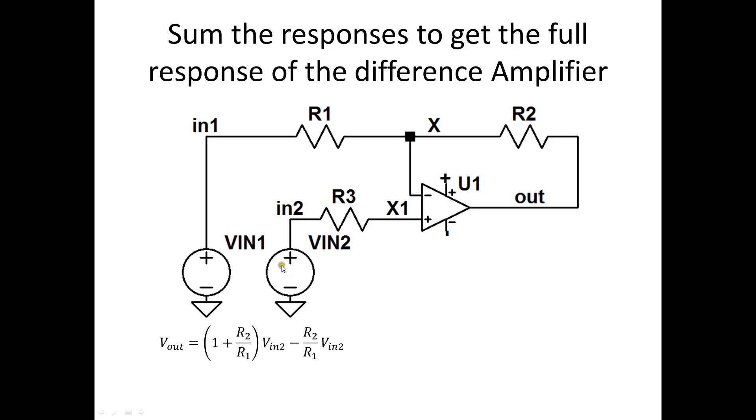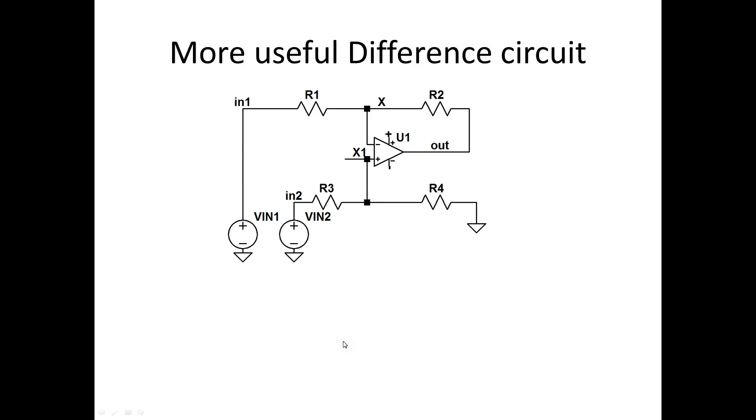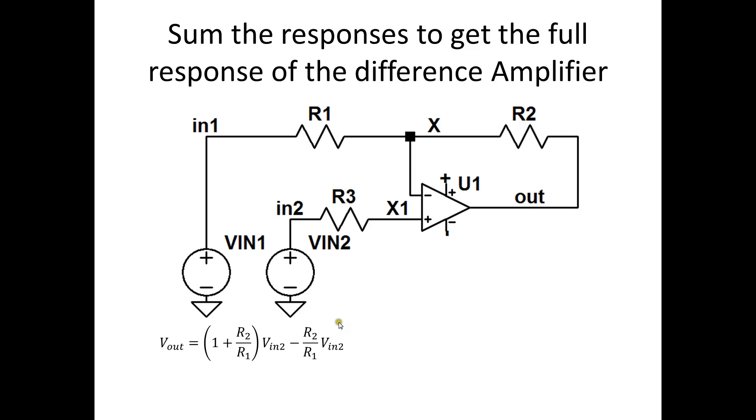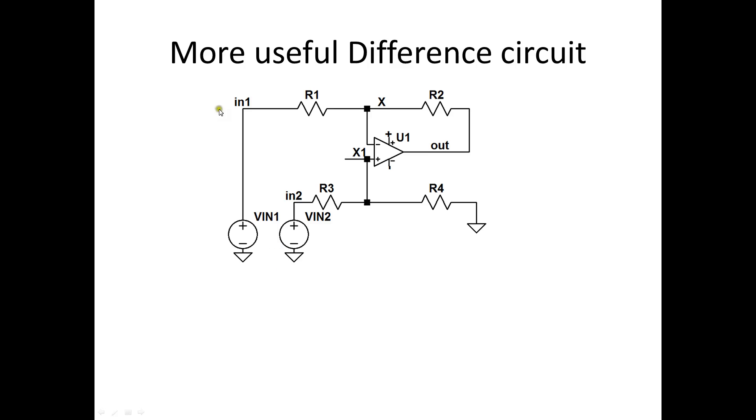And then when we sum the responses, we get back what's very easy to see is a non-inverting gain. And what's very easy to see is an inverting gain response. And just so you know, this should be V1, not V2.